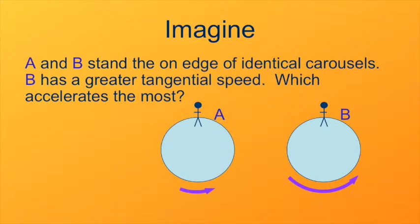Let's look at a somewhat different situation here. Now our situation is that A and B are standing on identical turntables. They're the same distance from the center, so they have the same radius. But they have different speeds. B is moving faster than A. So which one is accelerating the most?